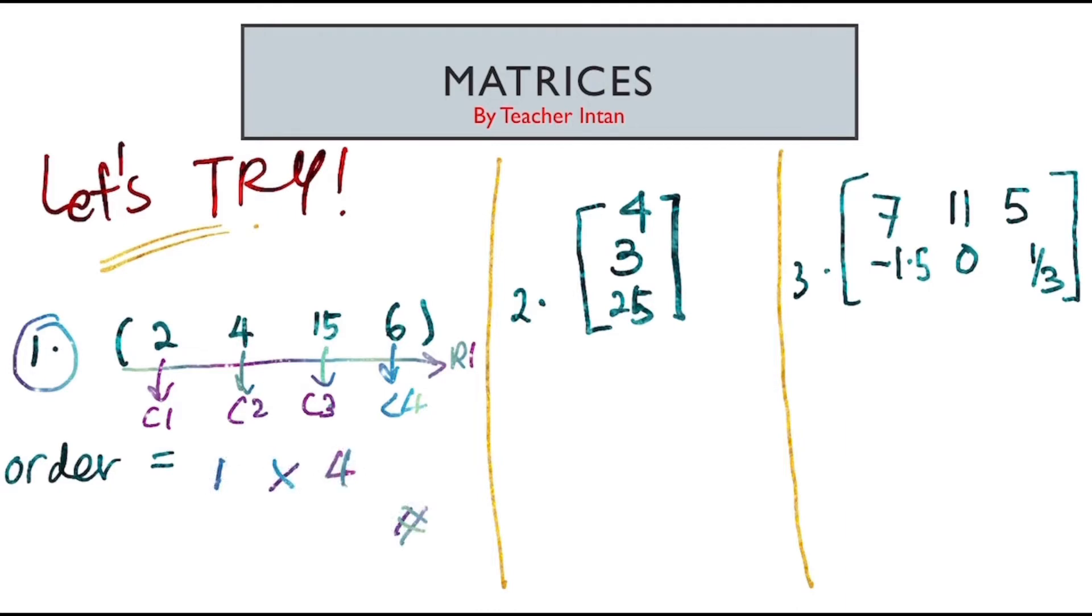Number 2, I have matrix 4, 3 and 25. So, 4 is in row 1, 3 row 2, 25 row 3. The column is only 1. So, the order is 3 times 1.